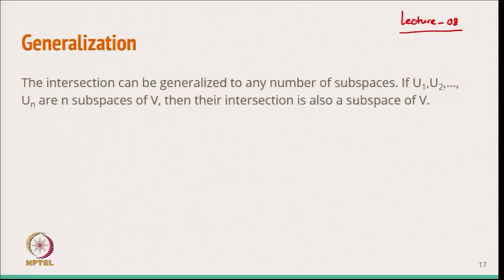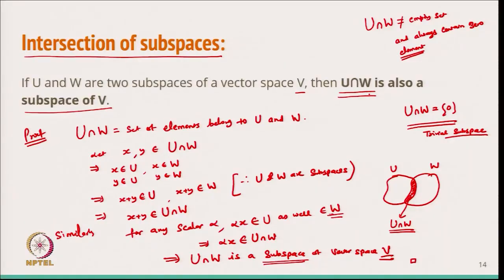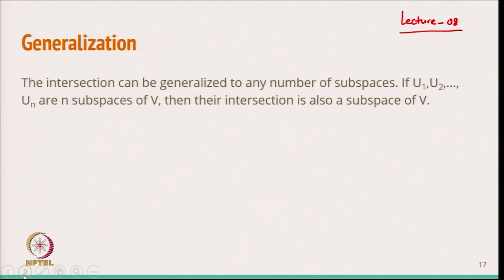In the previous lecture we discussed that if we have two subspaces u and w, and we take their intersection, then this intersection is also a subspace of v. Today we generalize this: if we have n subspaces u1, u2, up to un of v, then their intersection is also a subspace of v.